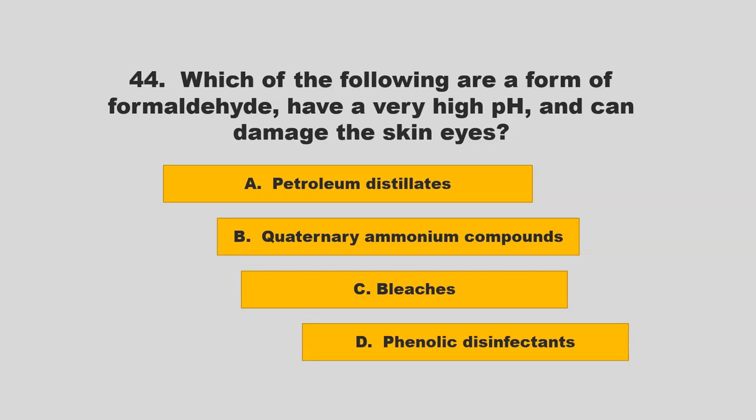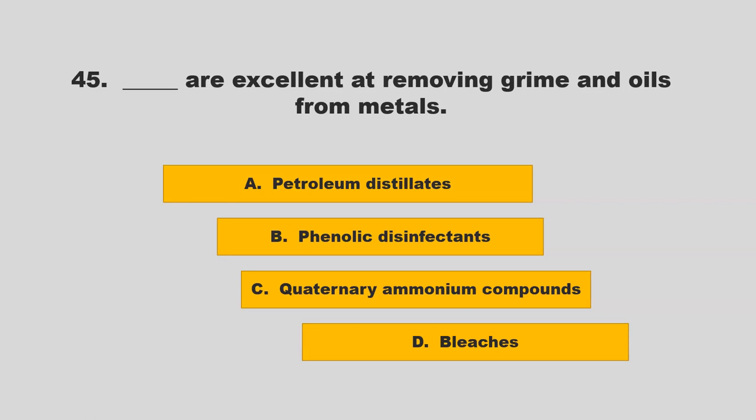Which of the following are a form of formaldehyde, have a very high pH, and can damage the skin and eyes? Options: petroleum distillates, quaternary ammonium compounds, bleaches, phenolics, or disinfectants. The correct answer is D: phenolic disinfectants.